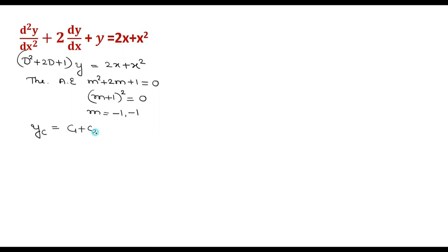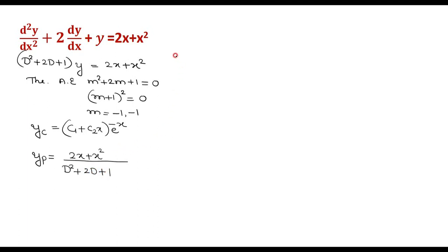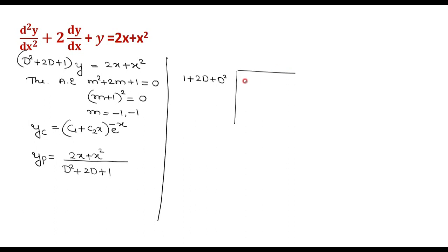For another problem, the complementary function is (c₁ plus c₂x)e^(−x). To find the particular integral yp, it is (2x plus x²) divided by D² plus 2D plus 1. Now take the division method. Write the differential equation in increasing order of d: 1 plus 2d plus d², and the polynomial in decreasing order: x² plus 2x.